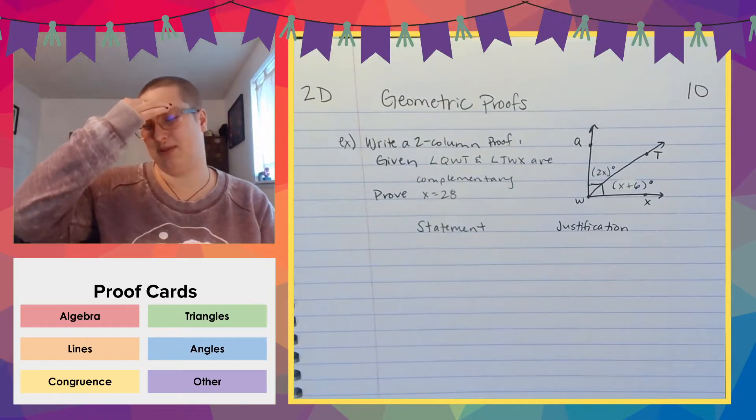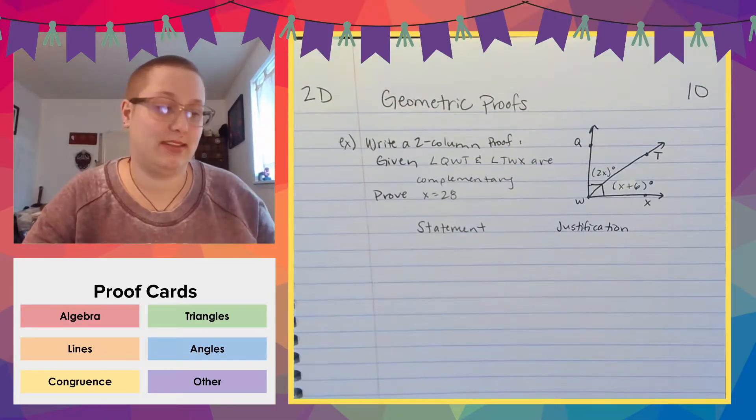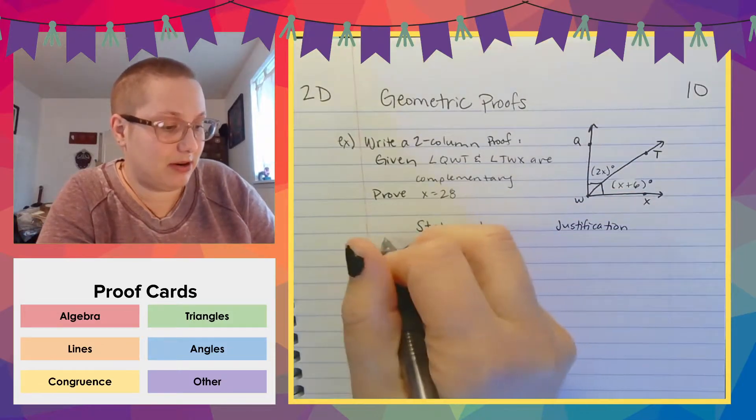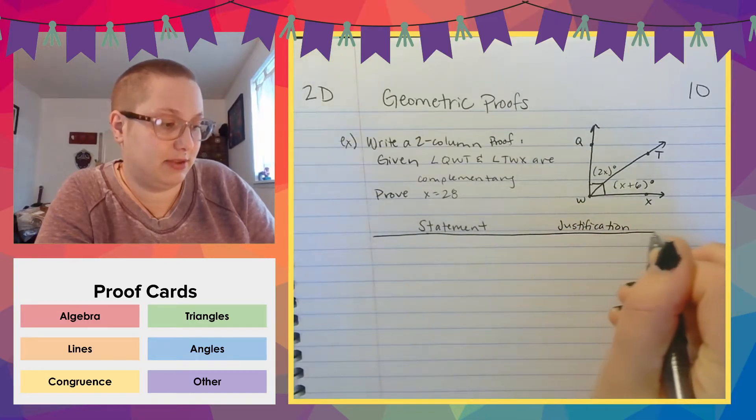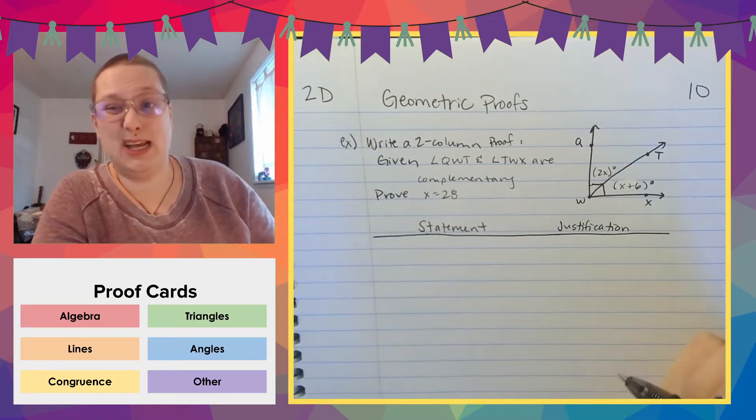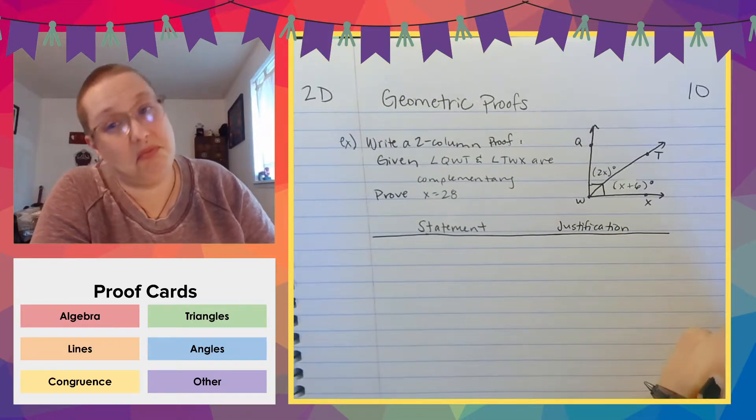We're not going to be doing those unless I really decide that your book needs you to. I taught this in the past with a book that didn't care about paragraph and flow chart proofs. They are valid ways of representing a proof. They're totally valid. You should be able to read one, but I'm not going to make you create one.